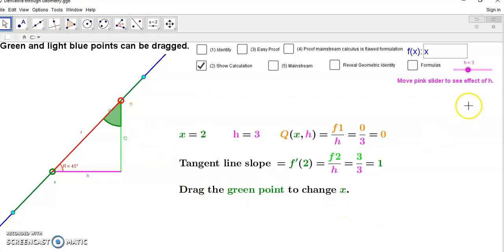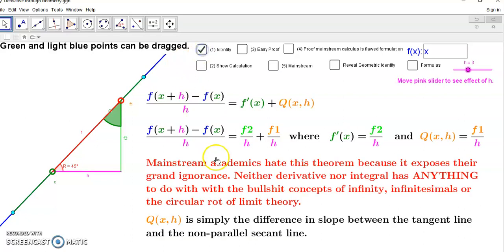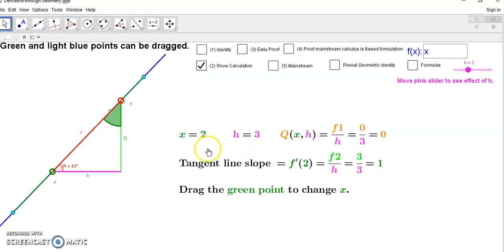So this is the identity. It says the secant line slope is equal to the slope plus the difference. Now if it's a straight line there is no difference, so all we have is just the slope, which is one at the point x=2. The slope is one and there is no difference because h doesn't really play a role. You can have any h you like and it will still give you the correct answer.